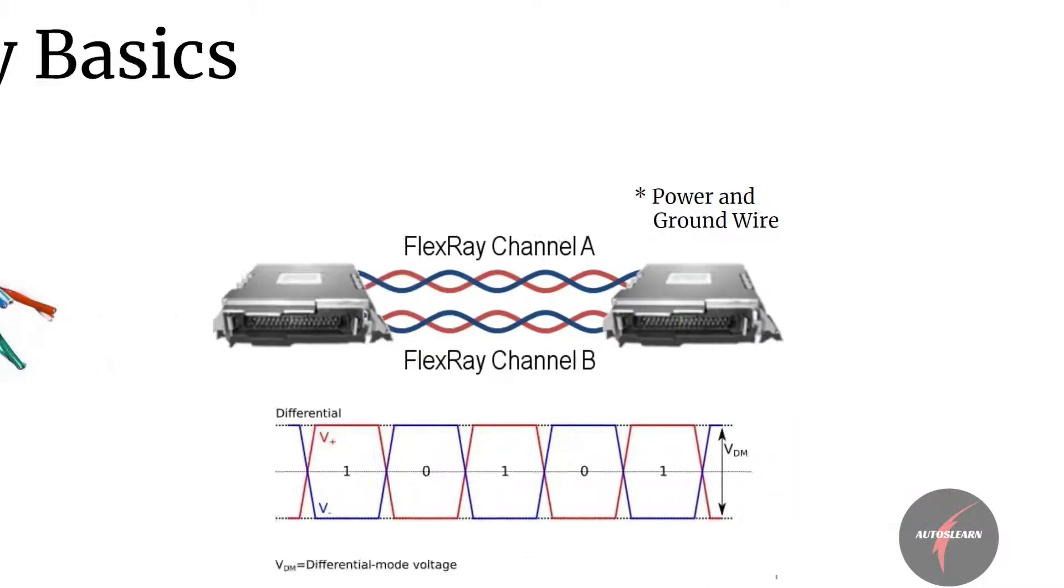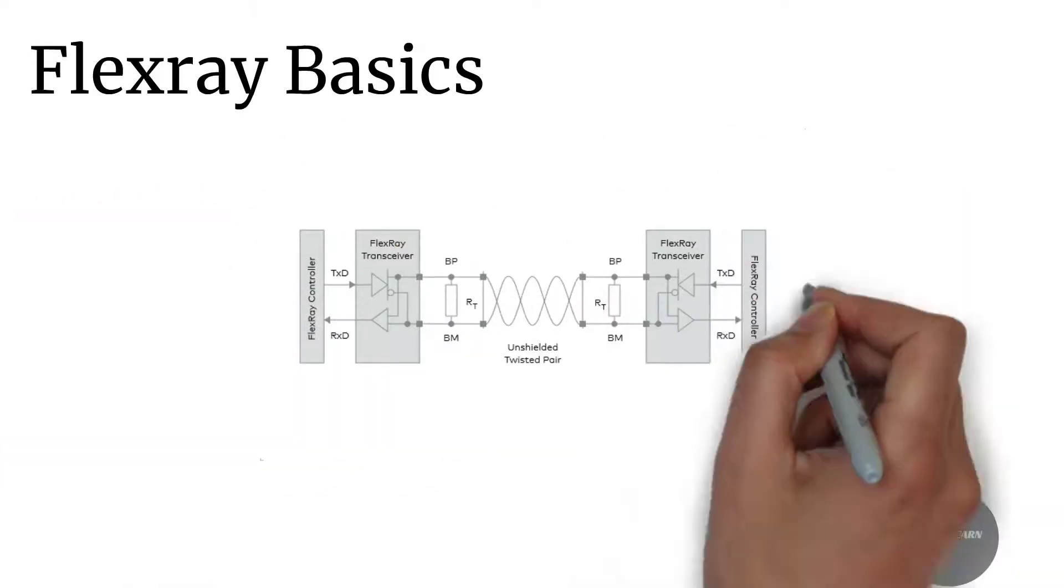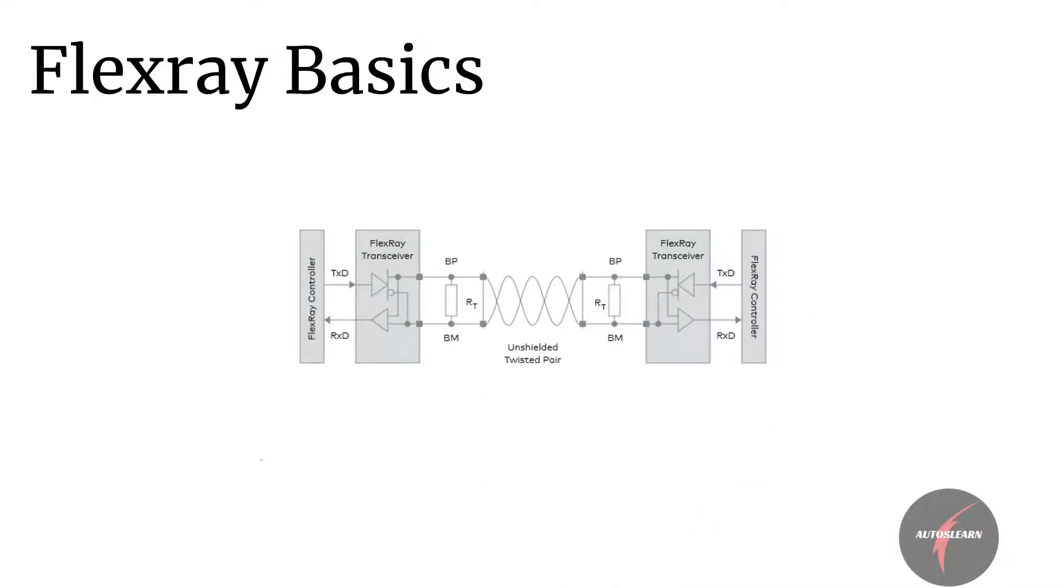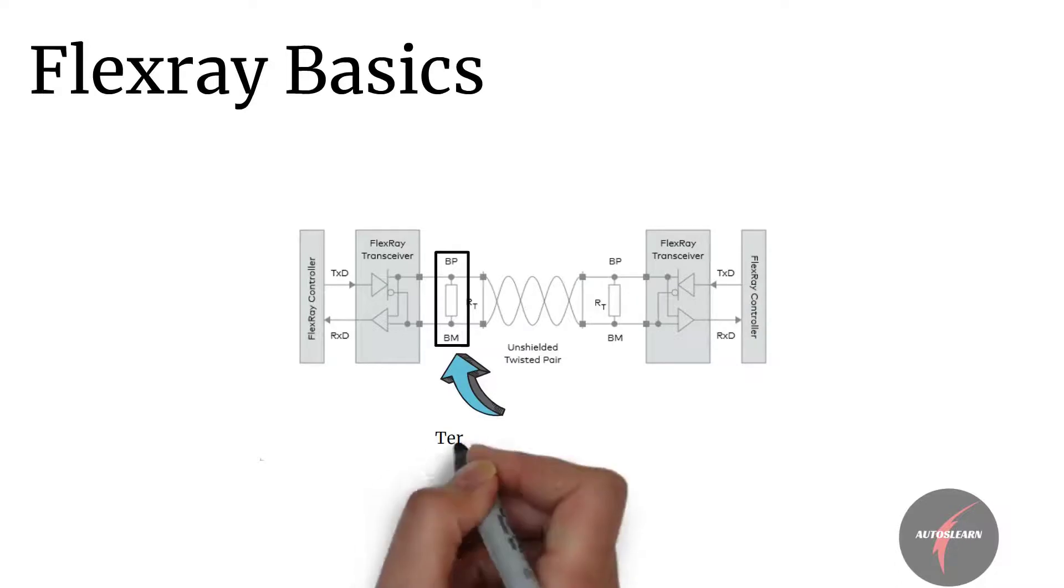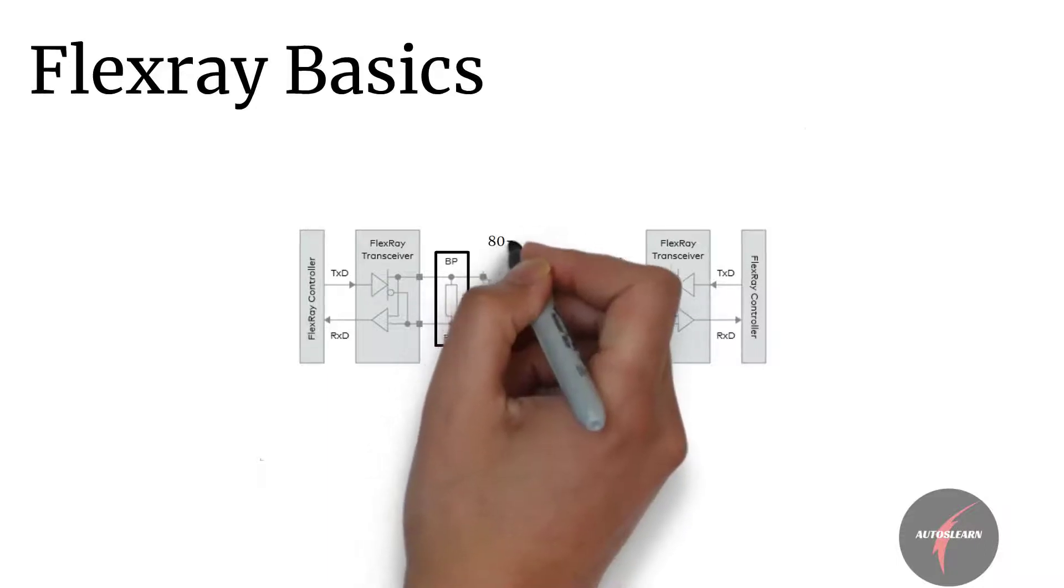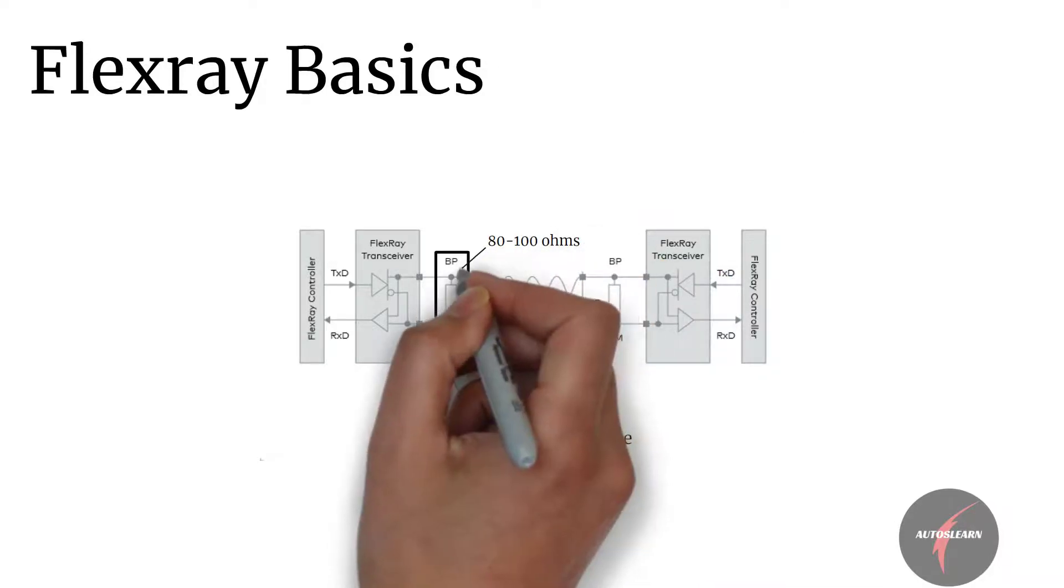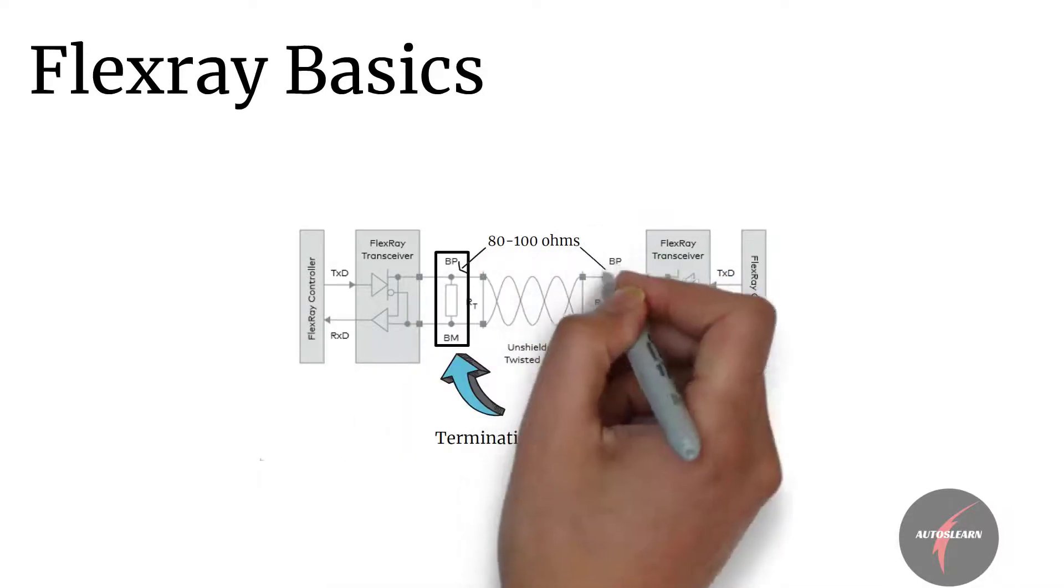FlexRay buses require termination at the end in the form of a resistor connected between the pair of signal wires. Termination is only required for end nodes on a multi-drop bus. Typical FlexRay networks have a cabling impedance between 80 to 100 ohms and the end nodes are terminated to match this impedance.